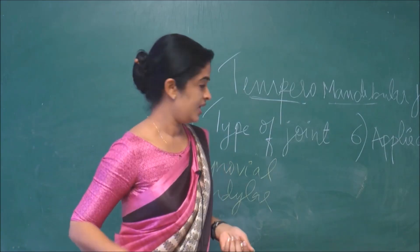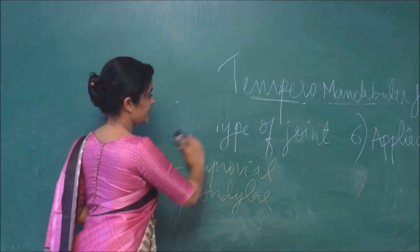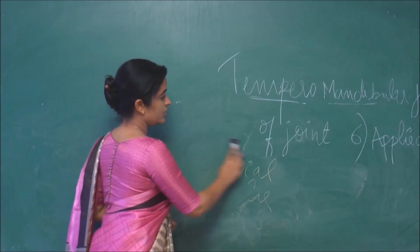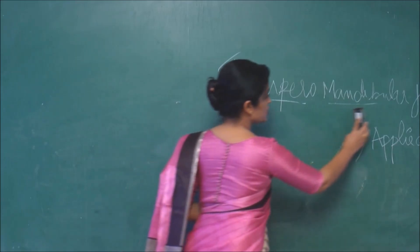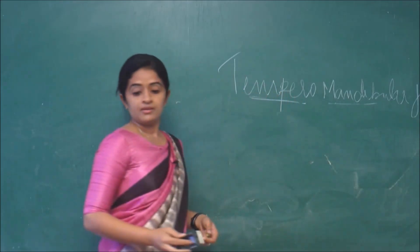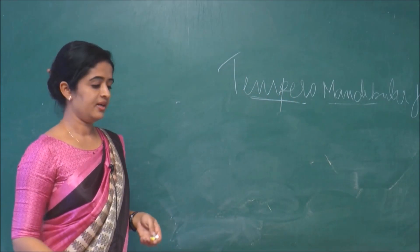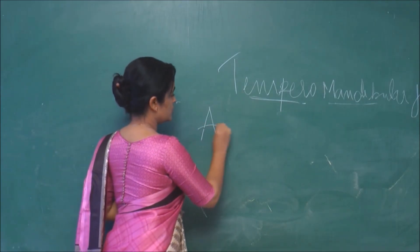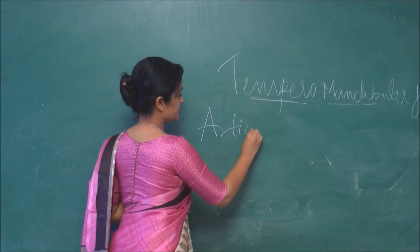Now we will move on to the articular surface. The first subheading is over. The type of joint is a type of synovial joint coming under the bicondylar variety. Now we will move on to the articular surface.